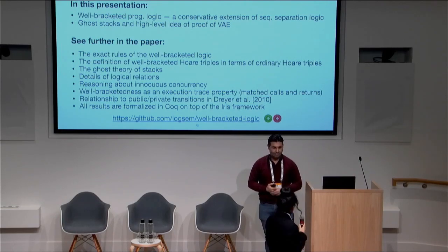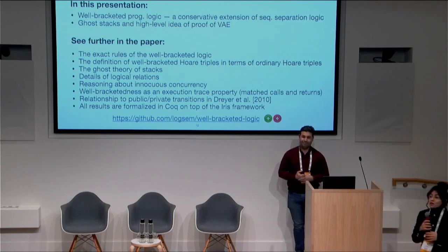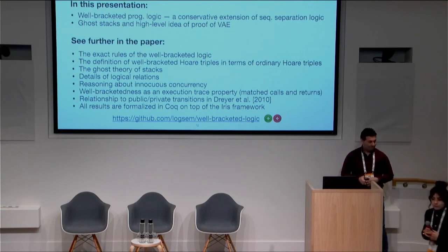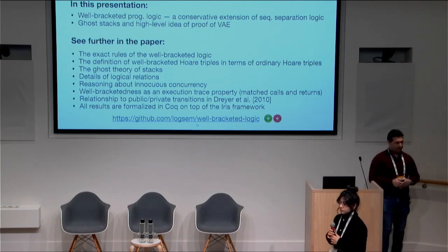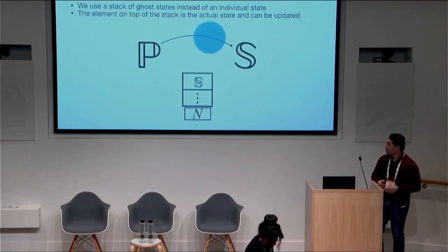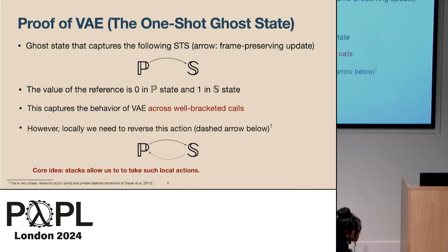Thanks, Amin. Questions? Derek: could you go back to slide six — this is like the public and private transitions from our logical relations work. First question: can you directly encode a transition system from that work with public and private transitions in a straightforward way? Is that in the paper? Yes, it is in the paper.